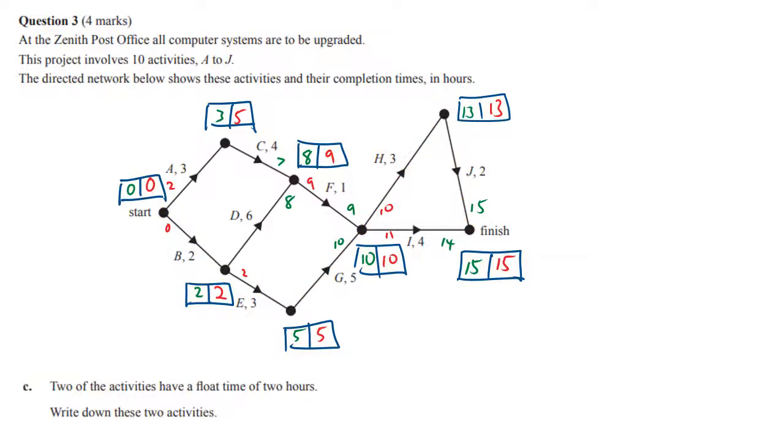Now we're looking for two activities that have a float time of two hours. The only place we can see a difference of two in the boxes is this one, so we might think there's a float of two on C. As I've pointed out in other videos, this float technique doesn't always work brilliantly, but let's isolate C. I'm going to write C comma four.